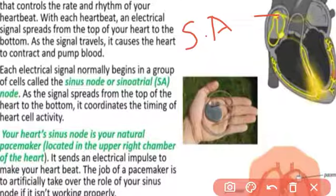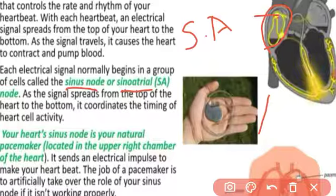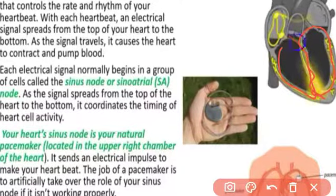SA node means the sino-atrial node. This SA node is located in the right auricle, near the opening of the superior vena cava. The SA node is called the natural pacemaker of our body. This SA node starts the impulses which start the heartbeat. The pacemaker sends the impulses to the wall of the heart, and due to these impulses, the wall of the heart contracts and simultaneously relaxes.